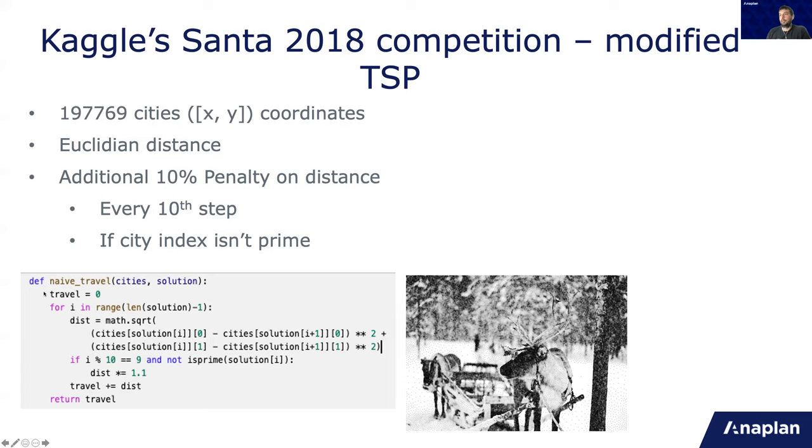And there is an additional 10% penalty of distance for every 10 steps if the city index on the ninth step isn't a prime number. So what I show here is basically the naive solution using lists. And you can see here the distance between two adjacent cities. And this is the part for the additional penalty. And then you sum everything and you get how much Santa traveled. Also, I added here the density of the cities and how it looked in the competition.